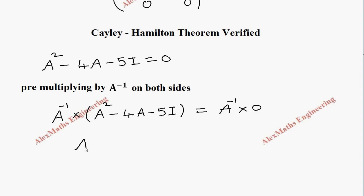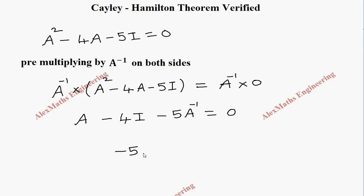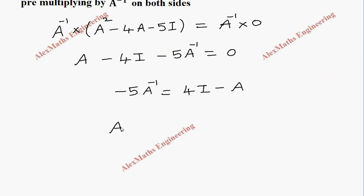When I multiply A inverse, the first term becomes A. Then minus 4 times A inverse times A gives minus 4I. Then minus 5I times A inverse gives minus 5A inverse, because identity acts like 1. The right-hand side is 0. So we keep minus 5A inverse here and carry 4I and minus A to the other side, then take minus 5 to the other side, giving A inverse equals minus 1 over 5 times (4I minus A).